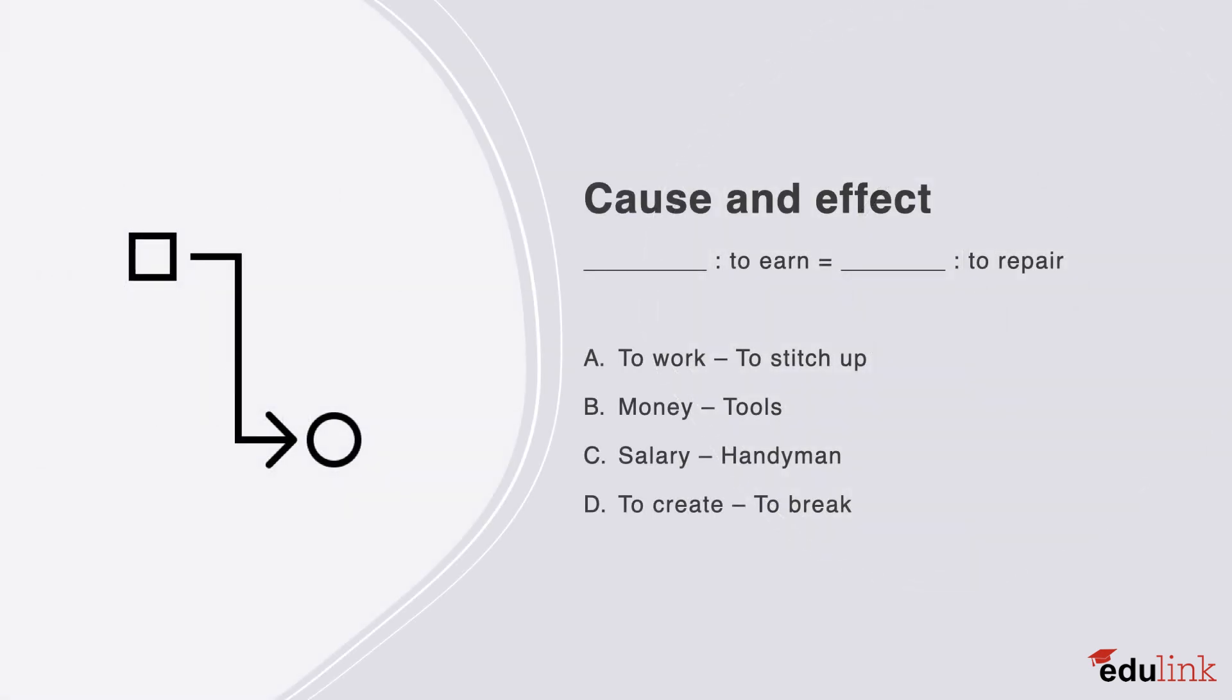The next type of relation is cause and effect. Read through the answers and select the correct one. Here the correct answer is A. Working as a cause leads to earning as an effect. As well, stitching something up is a cause to repairing it as the effect.